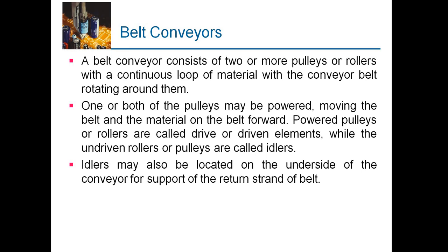The first type is the belt conveyor — it is the most common type. A belt conveyor consists of two or more pulleys or rollers with a continuous loop of conveyor belt rotating around them. One or both of the pulleys may be powered, moving the belt and material forward. Powered pulleys are called drive or driven elements, while undriven ones are called idlers or supporters. Idlers may also be located on the underside of the conveyor to support the return strand of belt.